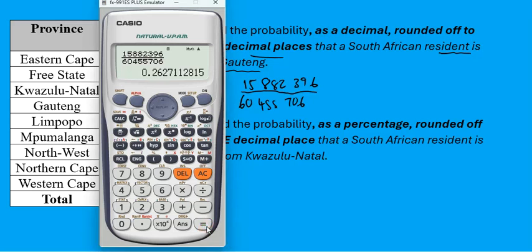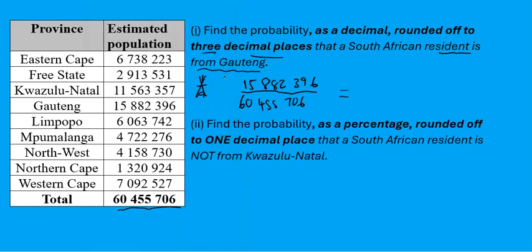So three decimal places: the third decimal is two, but there's a seven that comes after the two, so we round this up. The answer is 0.263, because the seven rounds the two up to three. So the probability is 0.263.